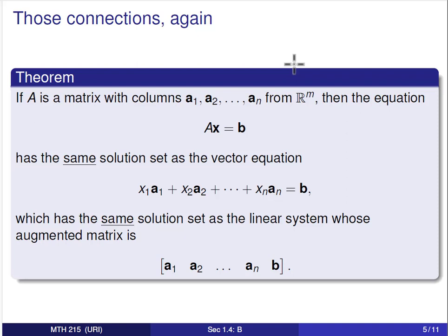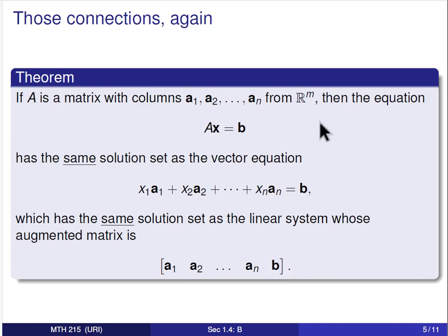Here's a theorem connecting our matrix equation Ax equals b to some previous concepts. If A is a matrix with columns a1 through an from RM, then the equation Ax equals b has the same solution set as the vector equation x1·a1 plus x2·a2 plus ... plus xn·an equals b, and that has the same solution set as the linear system whose augmented matrix is formed from the columns of A augmented by the column vector b. All three problems share the same solution set.